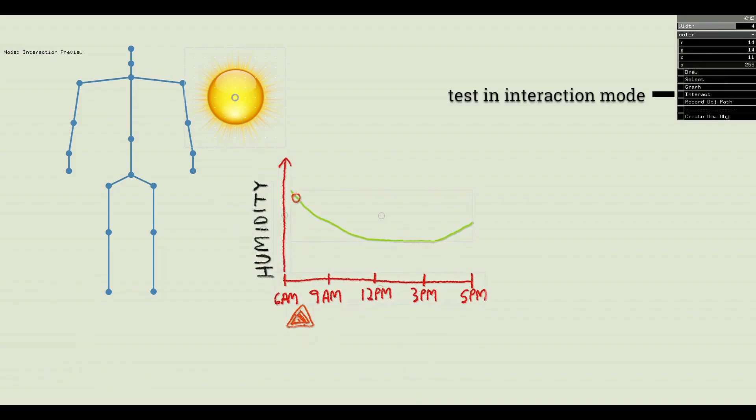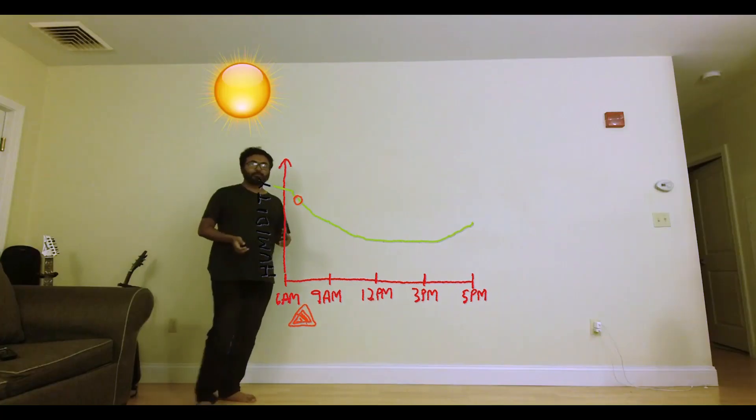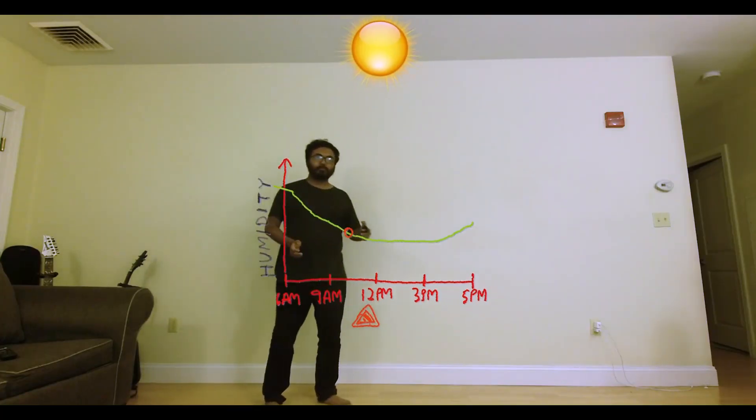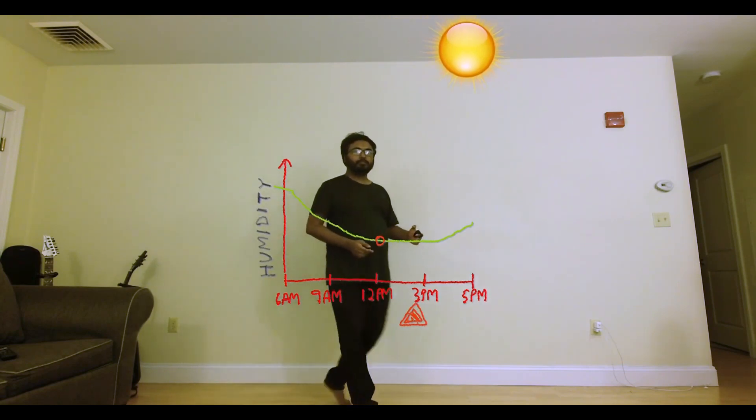Let's test the interactions in interaction mode. Just by creating some assets and a few parameterized relationships through the graph representation, we were able to create an interactive story about how humidity changes over the day.